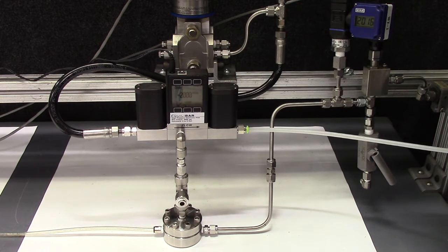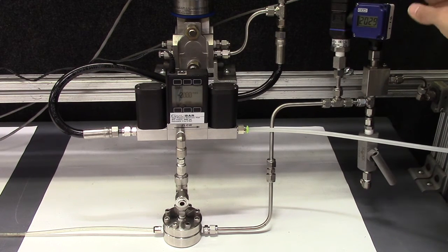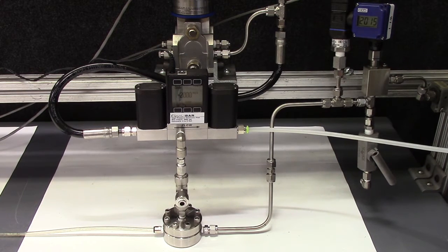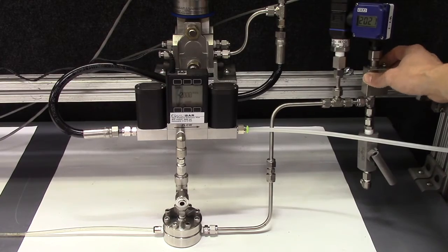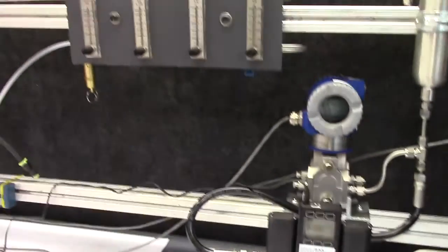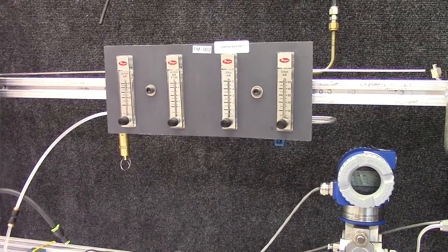The process pressure, the inlet of the back pressure regulator, is being monitored by a WIKA gauge here. The flow rate is being controlled via a needle valve here, and the flow rate is being monitored via a rotometer bank located right here.